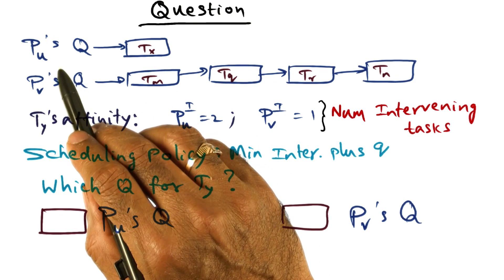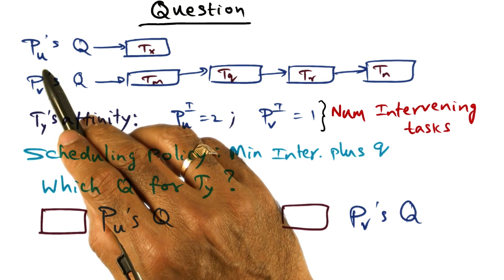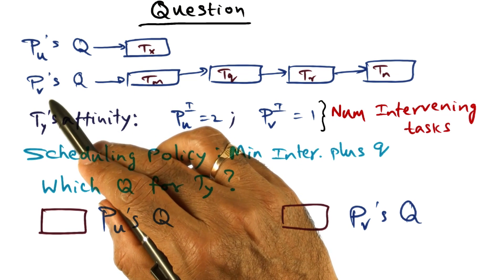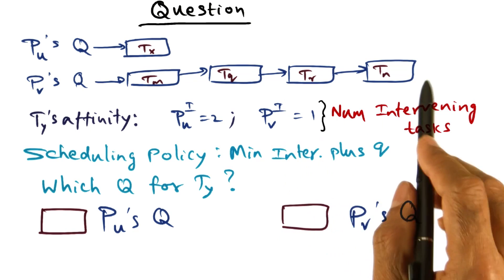The information that we have available is that on some process P_u, the Q contains a task T_x. On another process P_v, the Q contains four threads.